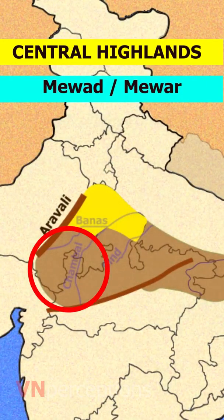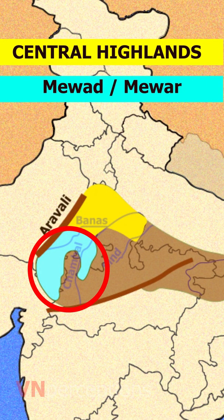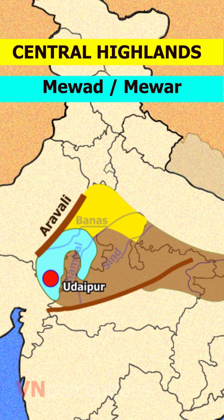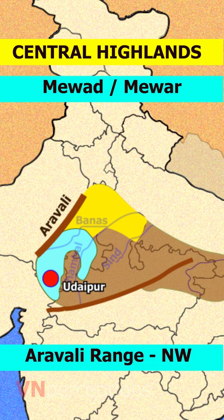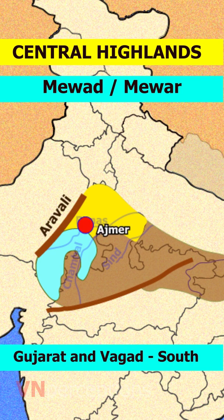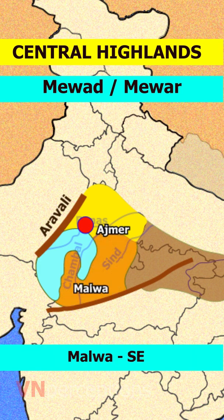The Mewad region, also called Mewar, lies in the south central part of Rajasthan. For centuries, the region was ruled by Rajputs. The princely state of Udaipur emerged as an administrative unit during the period of British East India Company governance in India and remained until the end of the British Raj era. The Mewar region lies between the Aravalli Range to the northwest, Ajmer to the north, Gujarat and the Vagad region of Rajasthan to the south, the Malwa region of Madhya Pradesh to the southeast, and the Hattodi region of Rajasthan to the east.